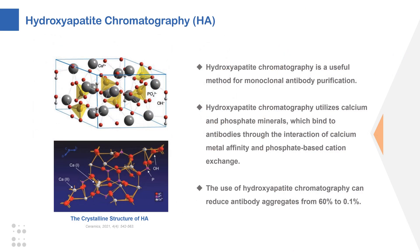Hydroxyapatite chromatography is a useful method for monoclonal antibody purification. It utilizes calcium and phosphate minerals, which bind to antibodies through the interaction of calcium-metal affinity and phosphate-based cation exchange. The use of hydroxyapatite chromatography can reduce antibody aggregates from 60% to 0.1%. Therefore, hydroxyapatite chromatography is used after protein A chromatography — the protein A eluate contains purified antibodies and residual impurities associated with cell culture and leached protein A, and hydroxyapatite chromatography can effectively remove these impurities. Despite these advantages, hydroxyapatite chromatography is routinely used only for native antibodies in downstream processes.